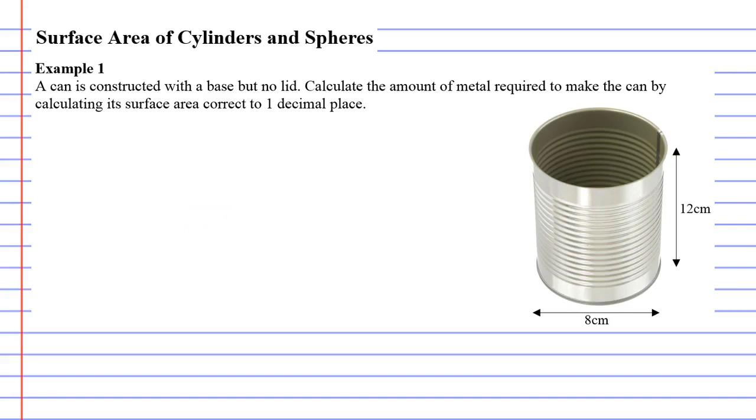We notice that all three equations started off the same, they always started with 2πrh and then it ended with the amount of circles you had. So it only has a base, so only one circle, so we just have πr² once. Now we're going to figure out what r and h is.